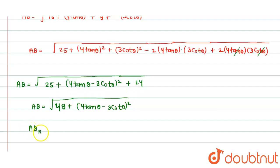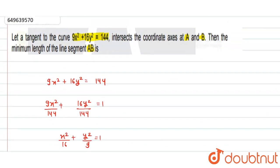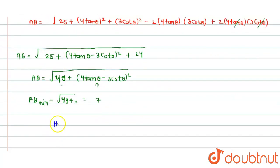Now we need to find the minimum of AB. The term (4tanθ - 3cotθ)² is always ≥ 0, so its minimum value is 0. Therefore AB_minimum = √49 = 7. Hence, the minimum length of line segment AB is 7 units. That's all, thank you.